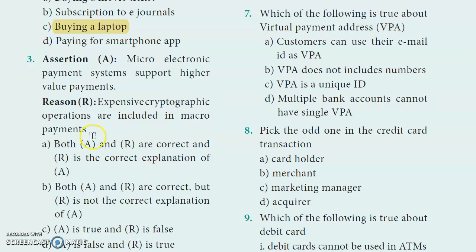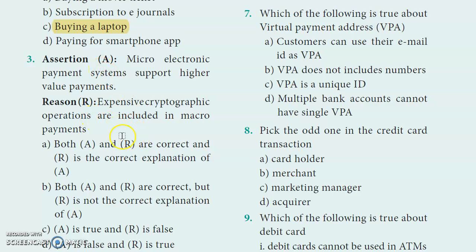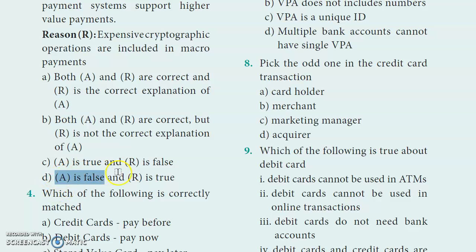Third question: Assertion and Reason. Assertion: Micro electronic payment system supports higher value payments — this assertion is false. Reason: Expensive cryptographic operations are included in macro payments — this reason is true. So the answer is Option D: Assertion is false and Reason is true.